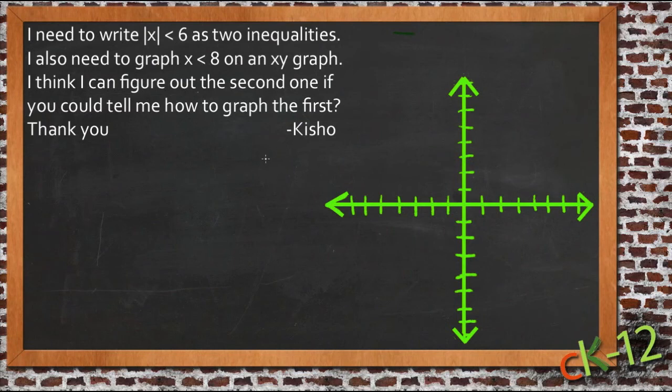So if I have the absolute value of x is less than six, then what I'm saying is that whether x is positive or negative, the value of that number can't be six or anything bigger. So in other words, x can't be less than negative six because then it would be a bigger number than six inside of here, and it can't be greater than regular positive six because then that number would be bigger than six in there.